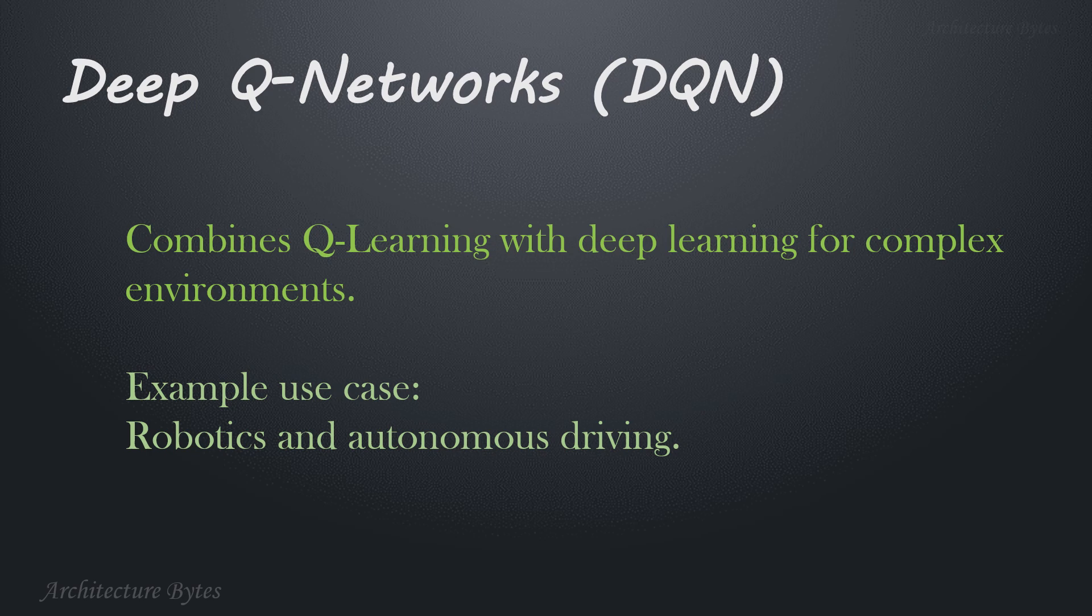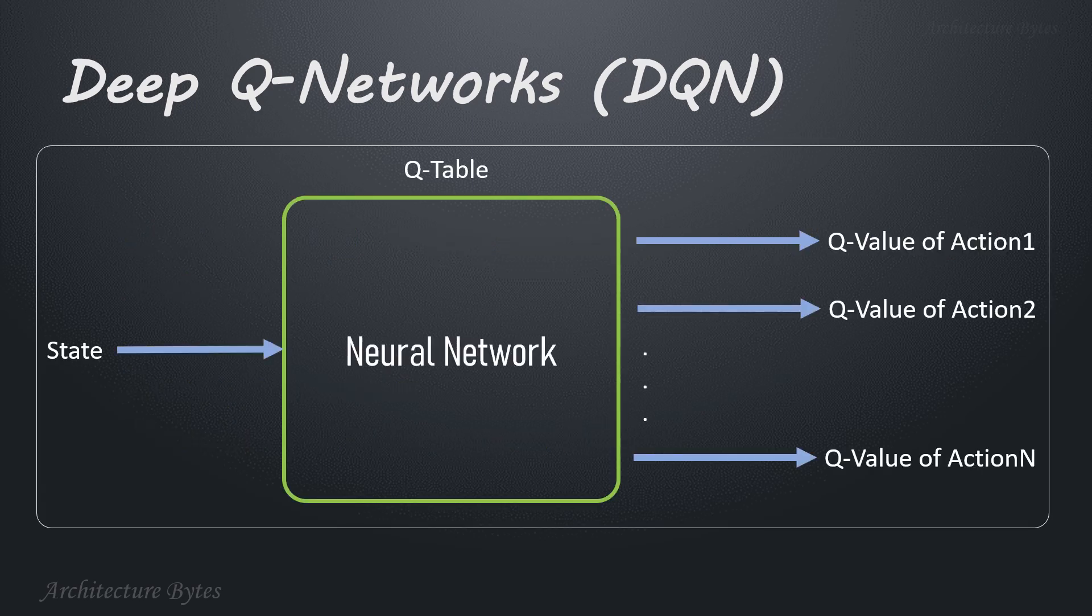Deep Q-networks combines Q-learning with deep learning for complex environments. Example use case: robotics and autonomous driving. Deep Q-network combines Q-learning with deep neural networks, enabling the agent to approximate Q values for large and continuous state spaces. Use case: video games, robotic control, and complex environments.